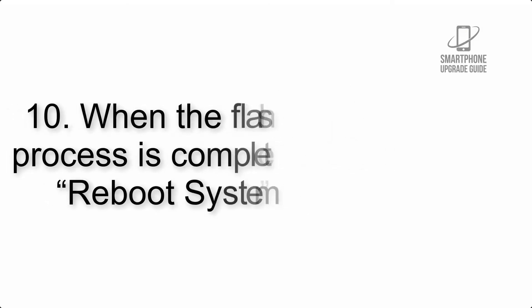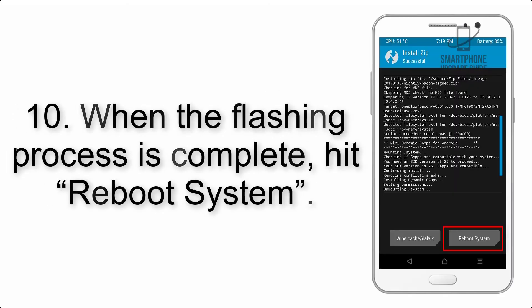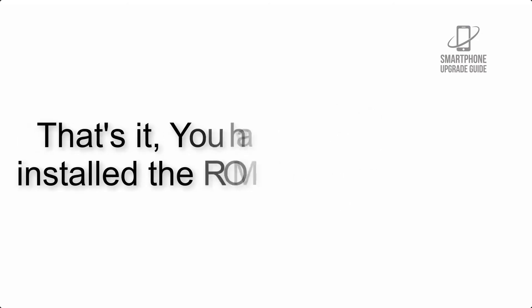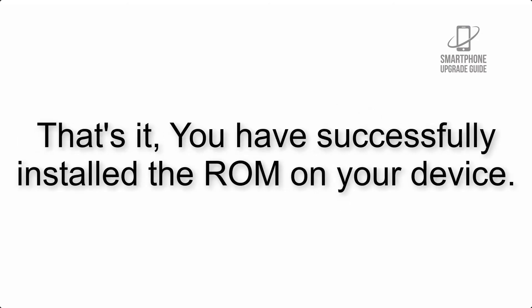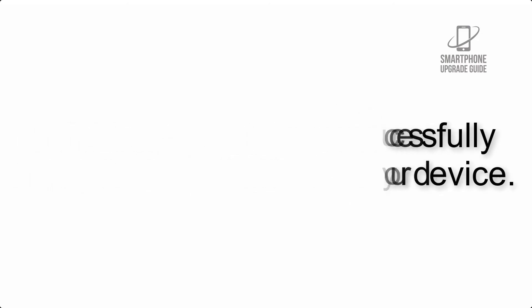Step 9: After Gapps flashing completes, select Wipe Cache and Dalvik from the bottom left side of the screen and swipe to wipe. Step 10: When the flashing process is complete, hit Reboot System. That's it — you have successfully installed the ROM on your device.